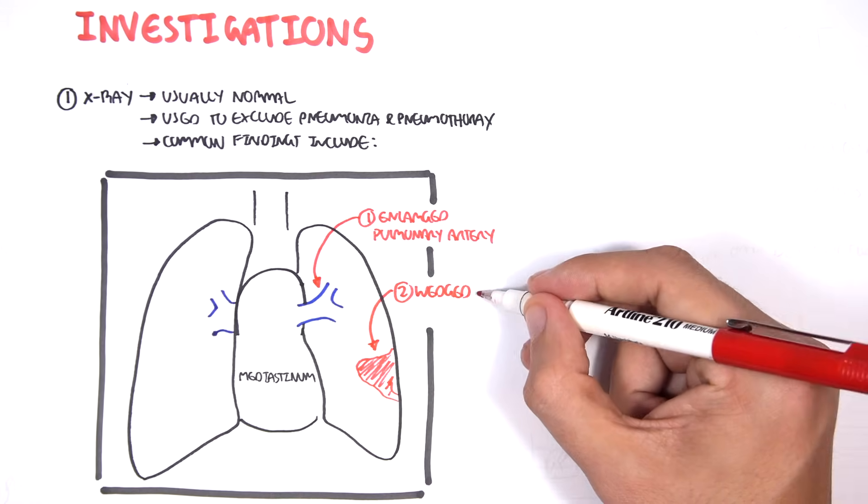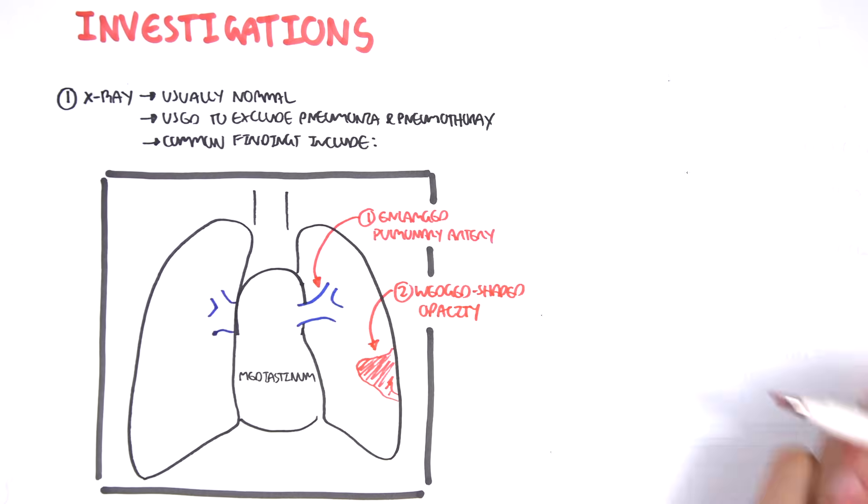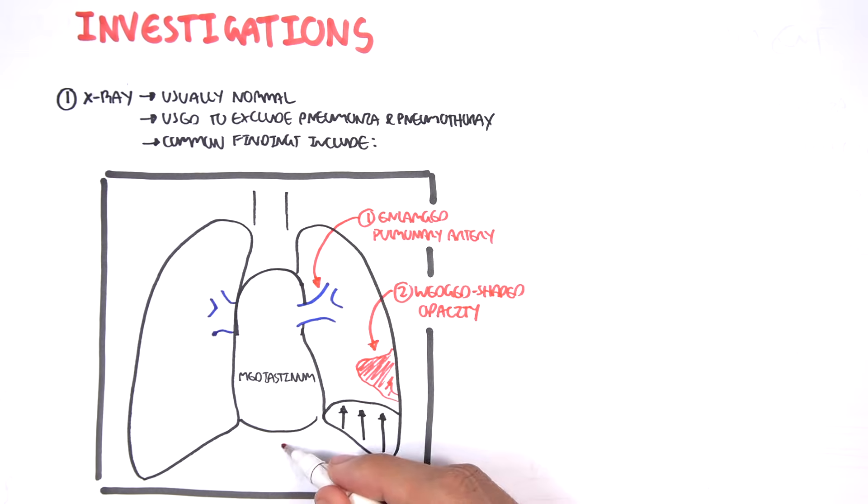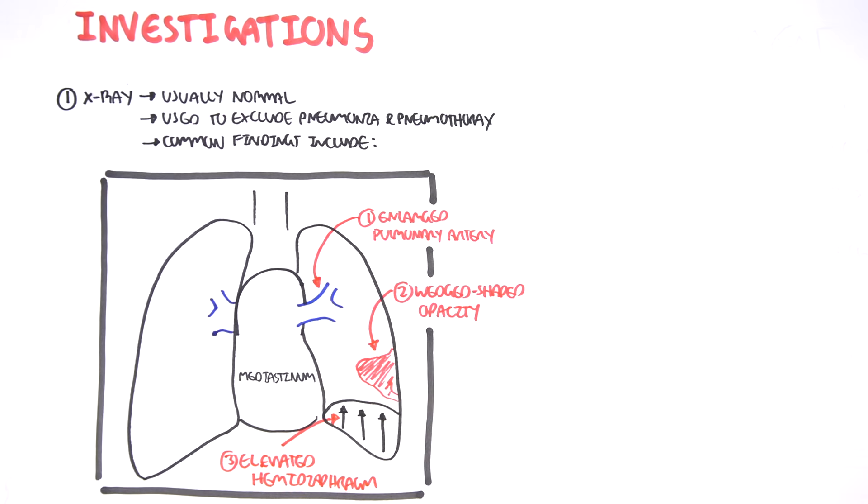One thing you can see is you can potentially see an enlarged pulmonary artery because of pulmonary vascular increase in pressure. Two, you can see a wedge-shaped opacity, which is somewhat like a consolidation, but it's due to infarction of that area. There's no blood supply to that area due to the emboli. Three, you can see an elevated hemidiaphragm. And four, you can see a pleural effusion.